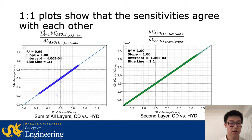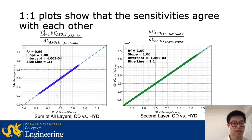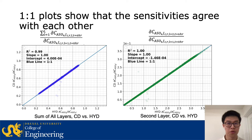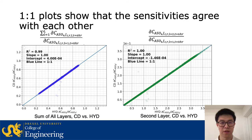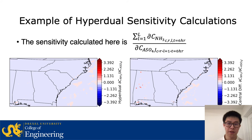We also created one-to-one line plots for these two graphs. On the y-axis is the central difference sensitivity and on the x-axis is the hyperdual sensitivity. The right panel shows the layer-2 accumulation mode sulfate concentration at R=6 with respect to initial perturbation of accumulation mode sulfate at layer 1, R=0. Almost all points lie on the one-to-one line, confirming that our implementation is correct. Here are some examples of more interesting sensitivities of different species.